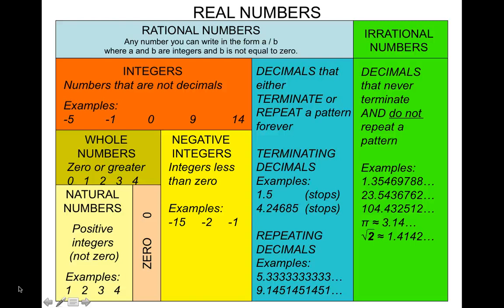Let's talk about different types of numbers. There are different types of real numbers: rational numbers and irrational numbers. The way this chart is designed helps you understand the relationships between these types and some others. Let's talk about the rational numbers first.